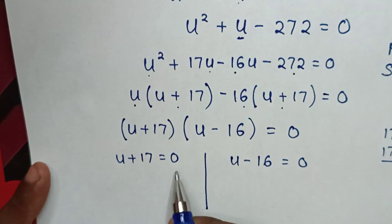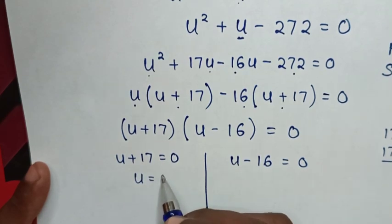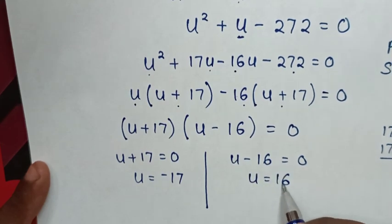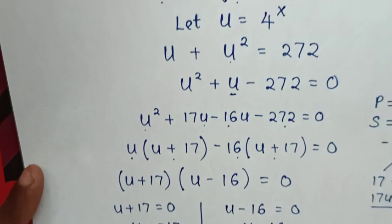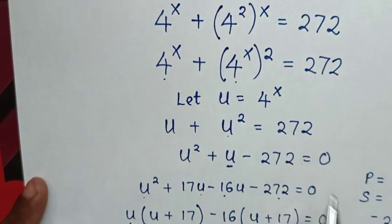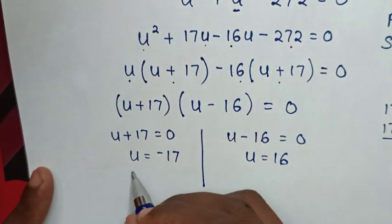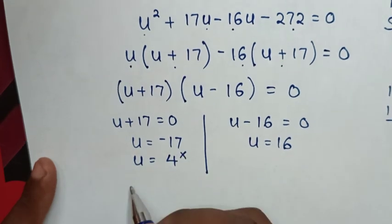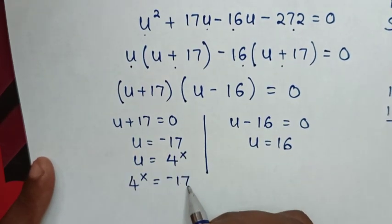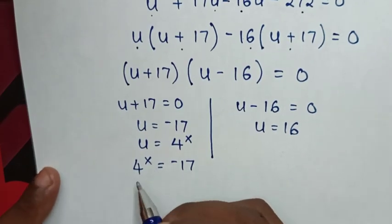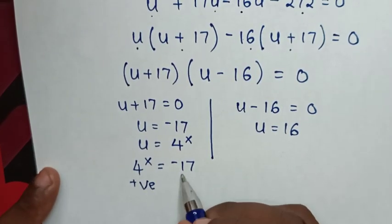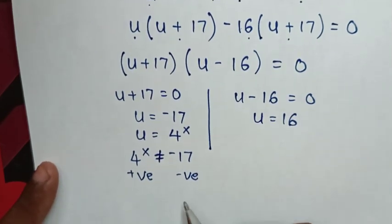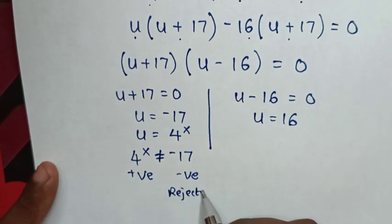From the first solution, taking 17 to the right side gives u equals negative 17. From the second solution, u equals 16. But we let u equal to 4 power x, so from u equals negative 17, we get 4 power x equals negative 17. However, 4 to the power of any number is always positive, so positive cannot equal negative — this solution is rejected.